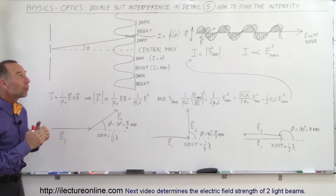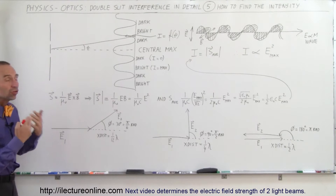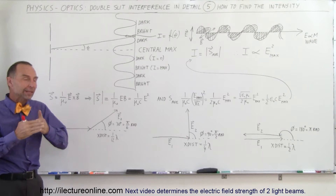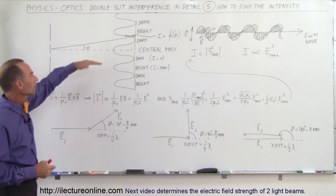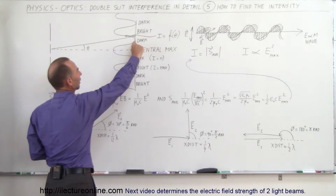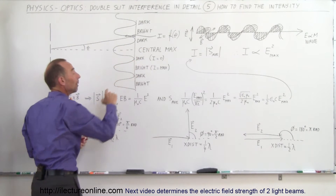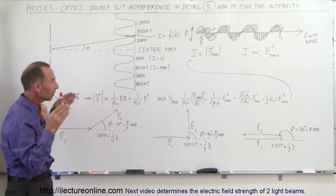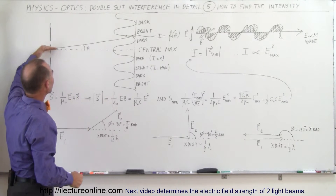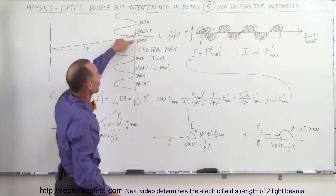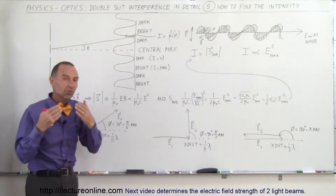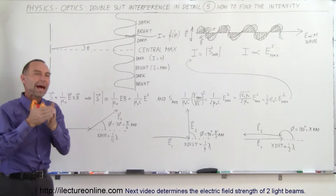Welcome to Electron Line. We're going to try and understand how we can calculate the intensity of an interference pattern at any point along the screen. We have a central maximum here, and this line represents the intensity of the light as it interferes at different angles. In some cases the interference will be destructive, in other cases constructive, depending upon the extra path length.